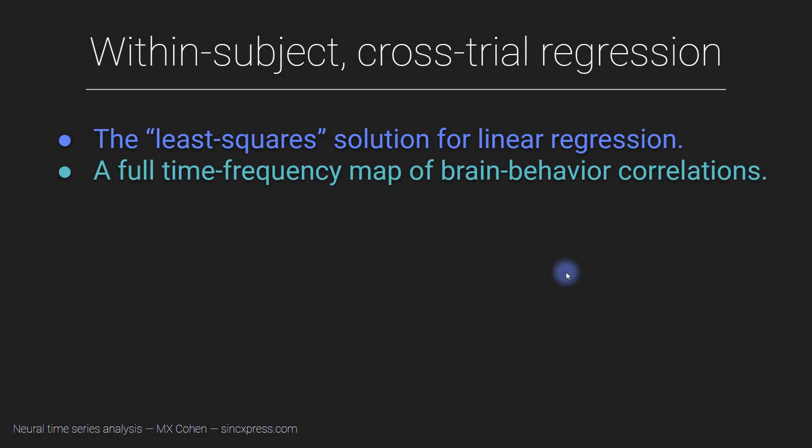Many analyses that you do with EEG data involve averaging the data over all of the trials. That of course makes sense because we assume that single trial data can be a bit noisy, and that's why it's beneficial to collect data from a lot of trials and then average over all of them. That gives us a cleaner estimate.